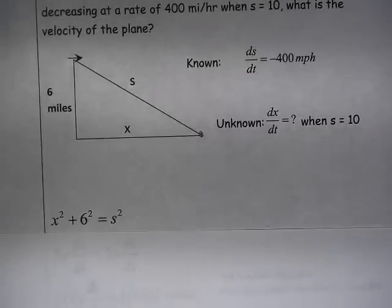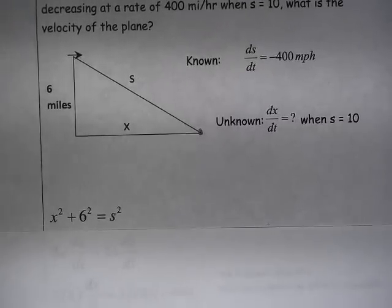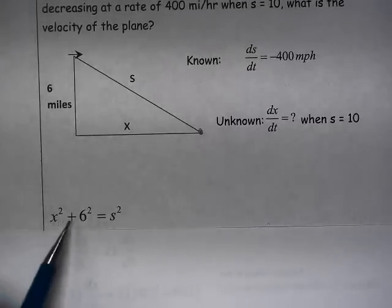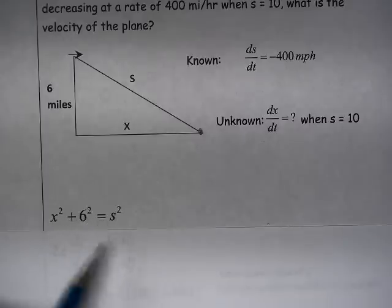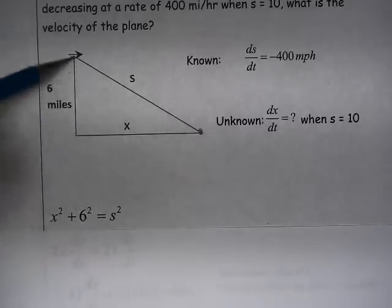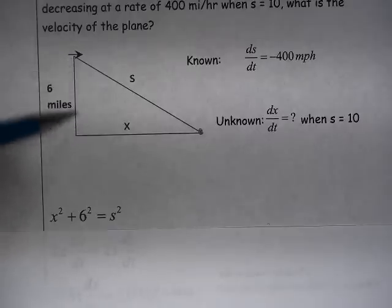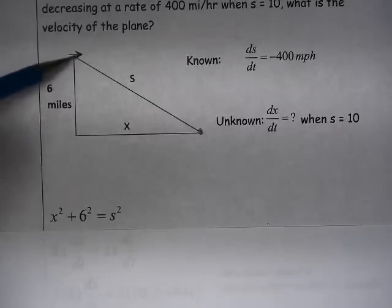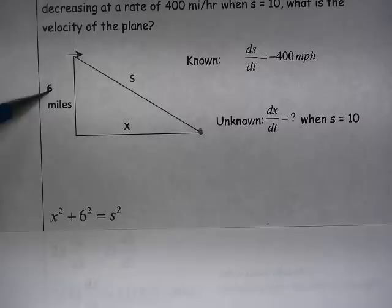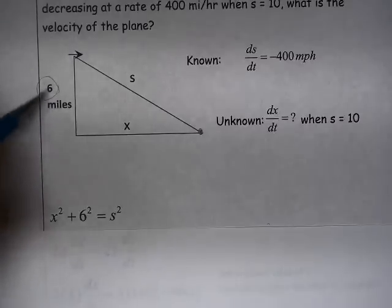So we can use the Pythagorean theorem here to relate these quantities. So notice here that I have x squared plus 6 squared equals s squared. So this altitude here is 6 and it's a constant 6. It never changes, it doesn't vary at any time during the course of this problem. The plane is only traveling in a horizontal direction, so that altitude of 6 is always constant. So we can use that value right from the start of the problem.